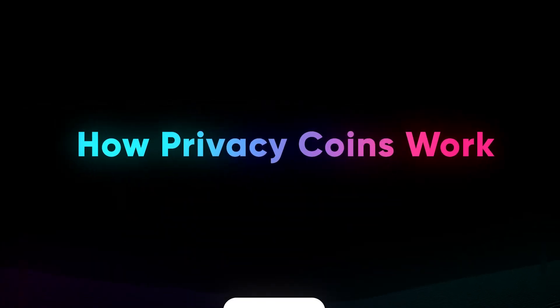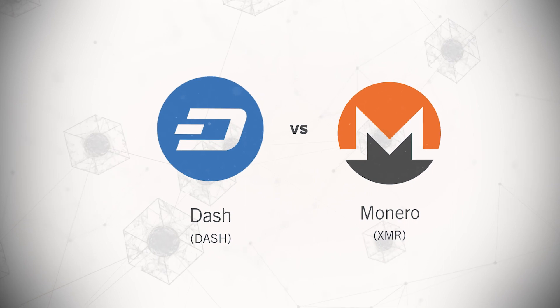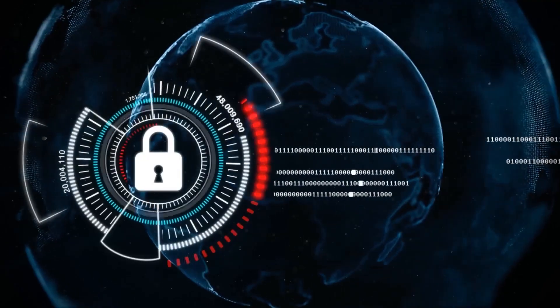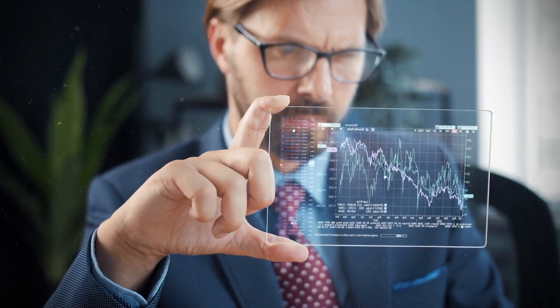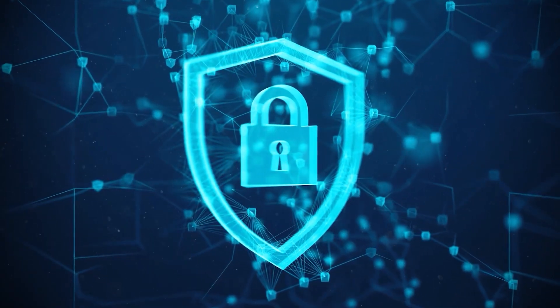How privacy coins work. At the moment, Dash and Monero are fighting for the title of privacy currency with the largest market valuation. The wonderful communities these projects have attracted have played a role in their success. Both protocols offer excellent privacy solutions.